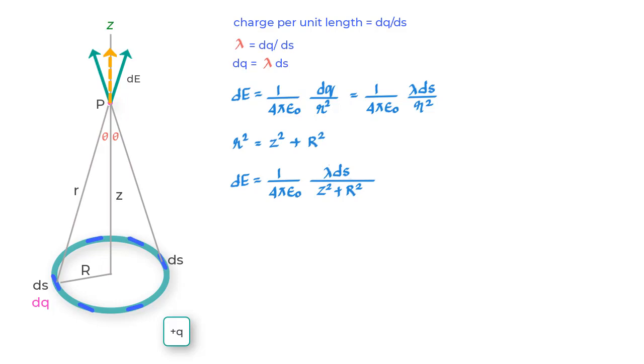What you end up having is only the vertical components as the net electric field at this point due to each element DS on this ring. This also makes things easier for us and further all the vertical components are in positive Z direction.